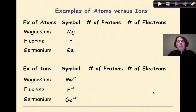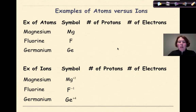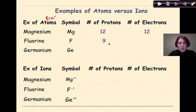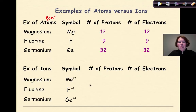So let's look at some examples of atoms versus ions. For atoms, I'm giving you the symbol, the number of protons, and the number of electrons. Magnesium (Mg) has 12 protons and 12 electrons. Fluorine has 9 protons, therefore 9 electrons. Germanium has 32 protons, therefore 32 electrons. With an atom, the number of protons and electrons are always going to be equal to each other.